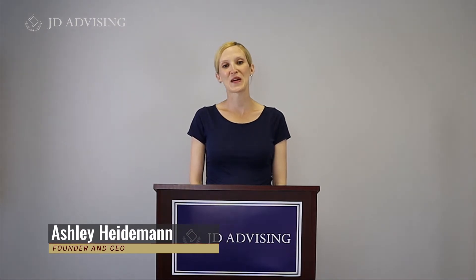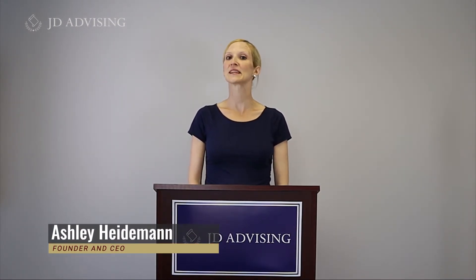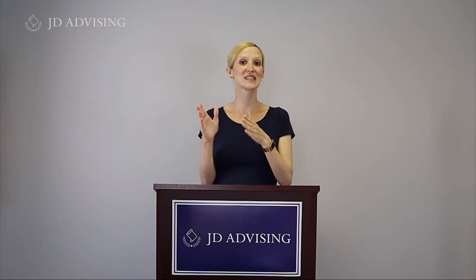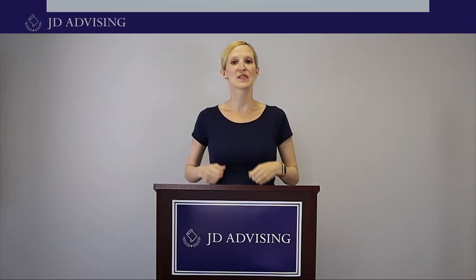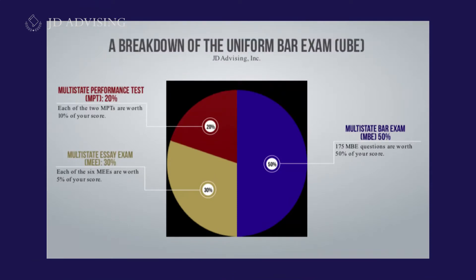The uniform bar exam is given over two days. The first day is the essay day and the second day is the multiple choice portion. The first day is divided into two components: the Multistate Essay Exam and the Multistate Performance Test. The second day is the Multistate Bar Exam, which is 200 multiple choice questions. Each day is worth 50% of your score.